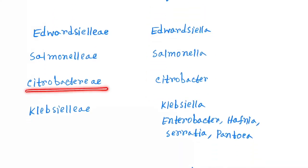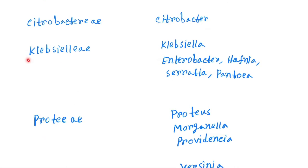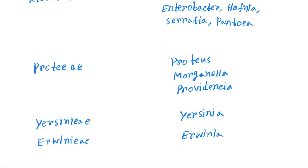Next, Citrobacteria, the bacteria is Citrobacter. Next, Klebsiella bacteria is Klebsiella, Enterobacter, Hafnia, Serratia, and Pantoea. And Proteeae, the bacteria is Proteus, Morganella, and Providencia. Next is Yersinia, the bacteria is Yersinia. Next is Erwinia, the bacteria is Erwinia.